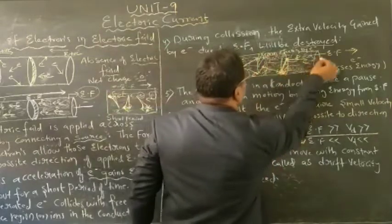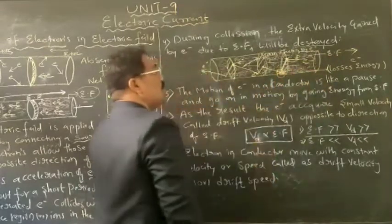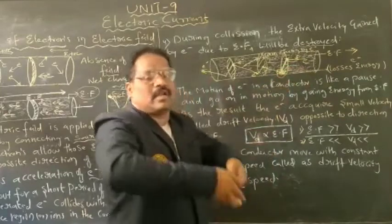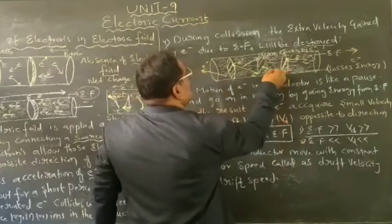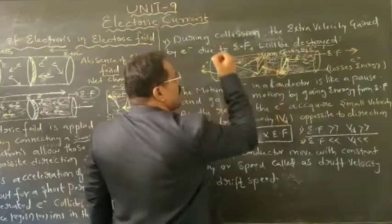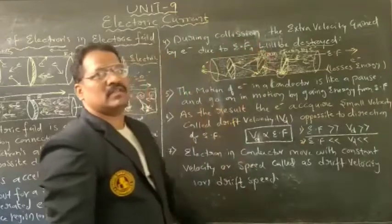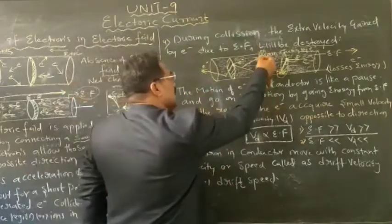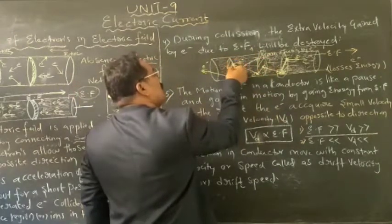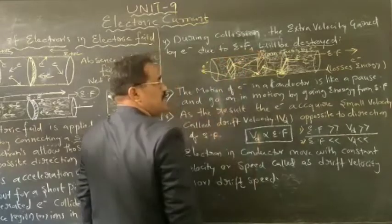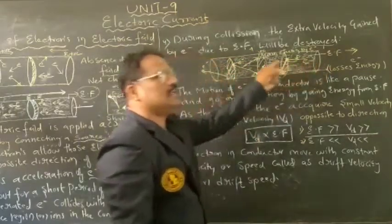Again, as the electric field is still applied around the conductor, the electron gains energy from the electric field, accelerates again, moves a little bit forward for a short period of time, then collides again with the lattice region or free electrons in the conductor, and decelerates once more.